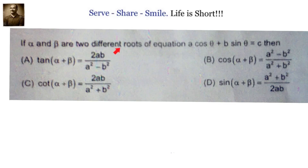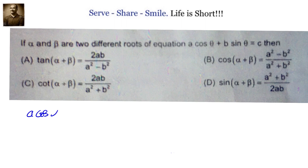If α and β are two different roots of the equation a·cos θ + b·sin θ = c, we need to find which options are correct — there can be more than one correct option. Looking at the options, we see expressions involving α + β: tan(α+β), cos(α+β), cot(α+β). Since α and β are roots, substituting gives: a·cos α + b·sin α = c and a·cos β + b·sin β = c.